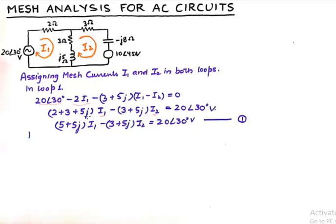So taking them on the other side we get 2 plus 3 plus 5J into I1 minus 3 plus 5J into I2 which is equivalent to the voltage in the loop. So finally we need to develop an equation which has some impedance with I1 and some impedance with I2 and impedance into current will be equivalent to voltage. So that is our equation number 1.